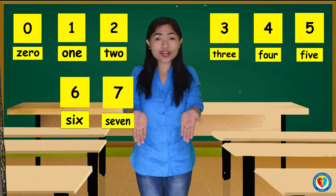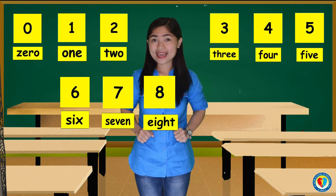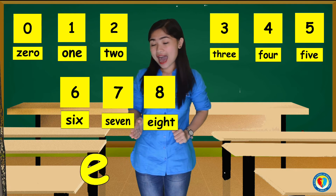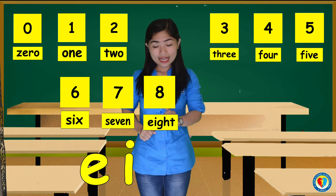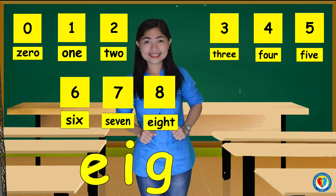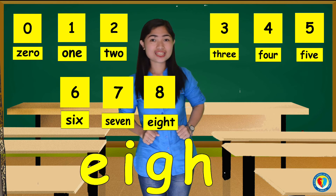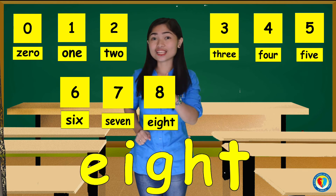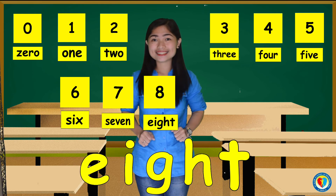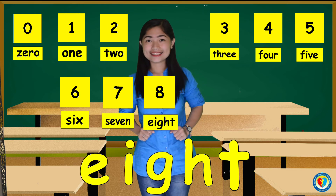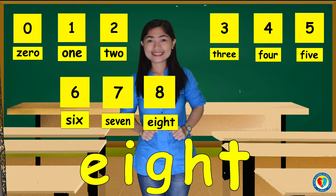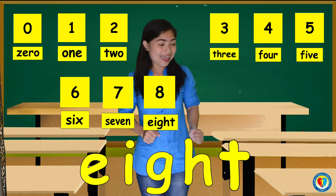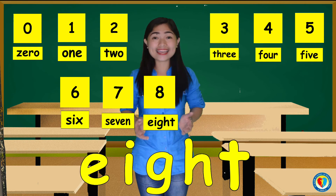For the number 8, we have E, I, G, H, T. Eight. Can you follow me, kids? E, I, G, H, T. Eight.